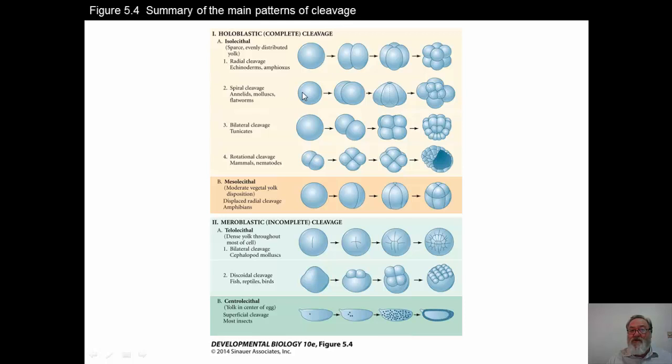Tunicates have bilateral cleavage, rotational cleavage in all of the mammals, as well as nematodes, interestingly, and then we already mentioned in the amphibian, mesolecithal cleavage where because of the large amount of yolk in the vegetal hemisphere, you get smaller cells on the top and larger cells in the bottom in that vegetal hemisphere.